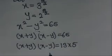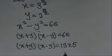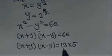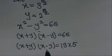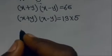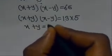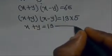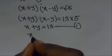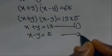We can obtain our simultaneous equations, whereby x plus y equals 13, which we name equation 1, and x minus y equals 5, which we name equation 2.